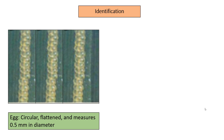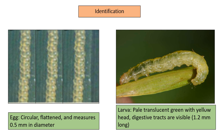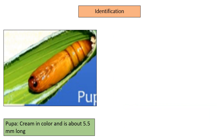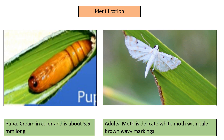Identification. Eggs are circular, flattened, and measure 0.5 mm in diameter. Larva is pale translucent green with a yellow head, and digestive tracts are visible. It is 1.2 mm long. Pupa is cream in color and is about 5.5 mm long.